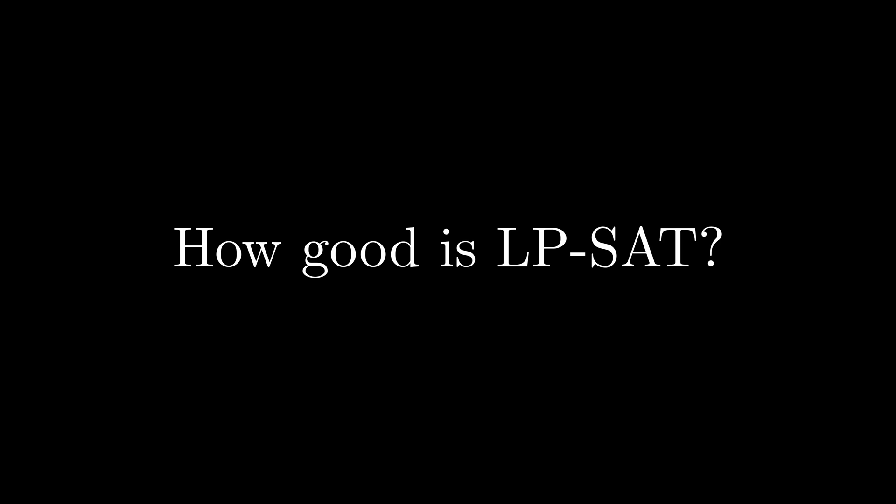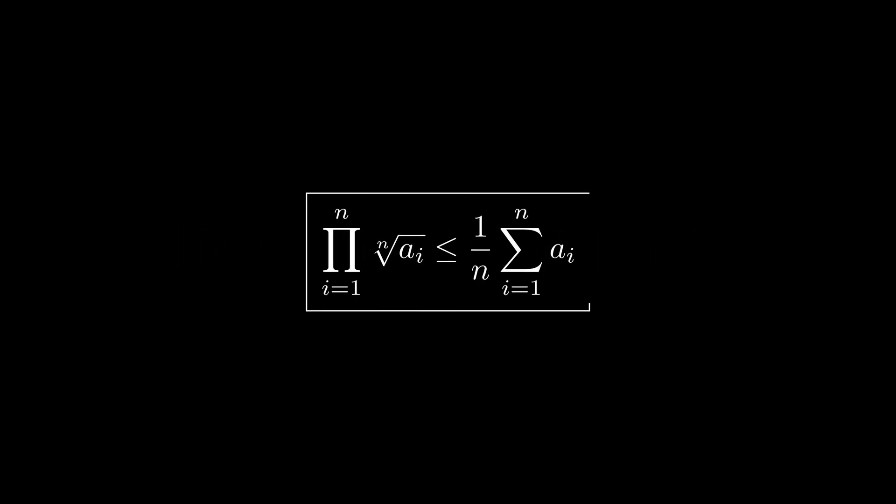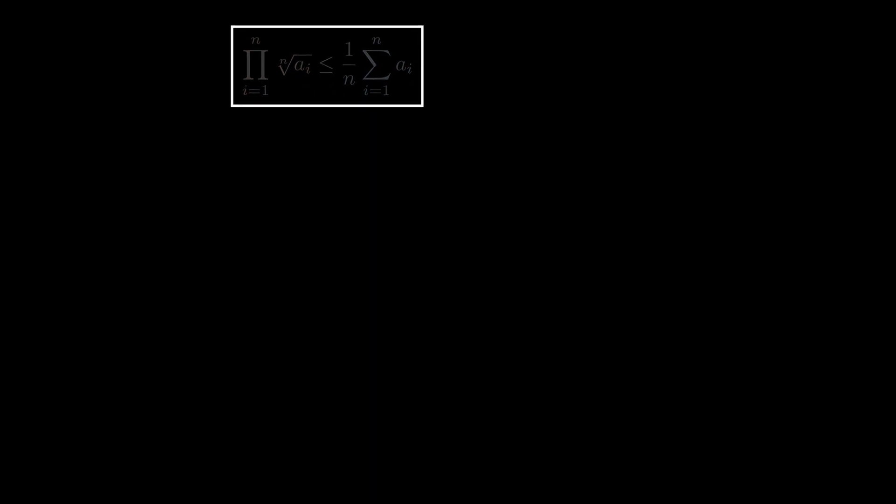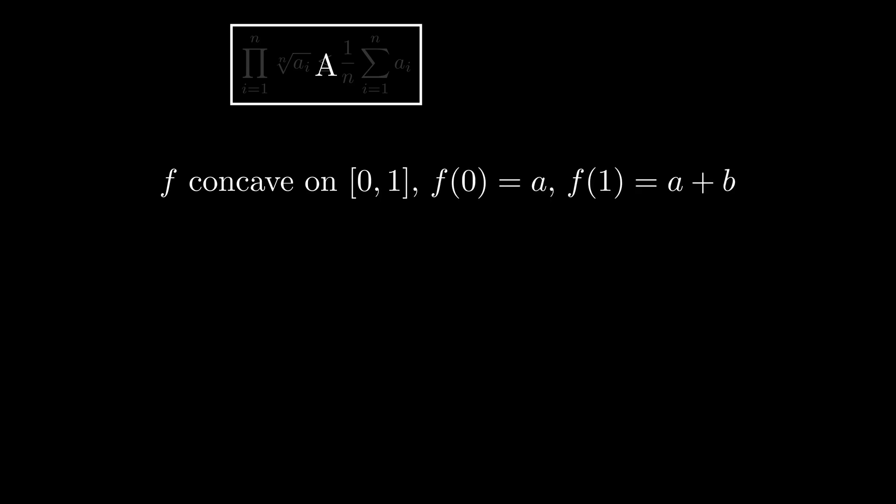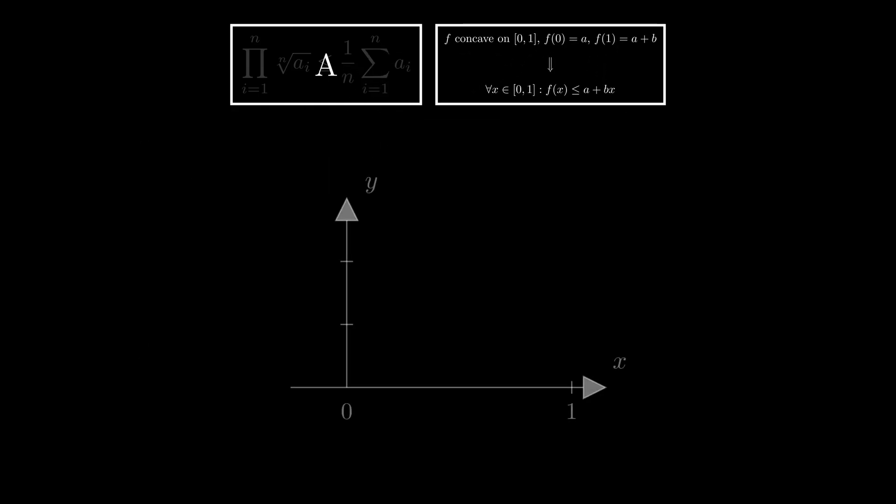For the proof, we'll use the following two facts. Fact A is the inequality of arithmetic and geometric means, which states that for any sequence of non-negative real numbers, the geometric mean is less than or equal to the arithmetic mean. Fact B is Jensen's inequality, which states that if a function is concave on the integral from 0 to 1, f(0) is a, and f(1) is a plus p, then the following inequality holds. It actually has this simple geometric interpretation. Feel free to pause here and think it through.